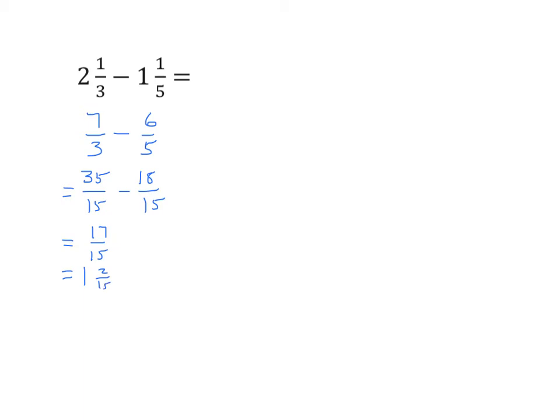What I'm going to do this time is I'm going to subtract the whole first. So that way I'm working with smaller numbers. So I'll rewrite the expression 2 and 1 third minus 1 and 1 fifth. Okay, we can subtract the whole first. So 2 minus 1 is 1. So now I have 1 and 1 third minus 1 fifth.